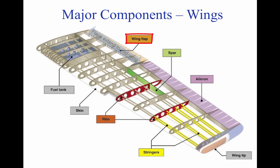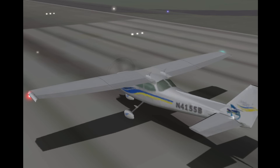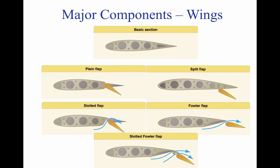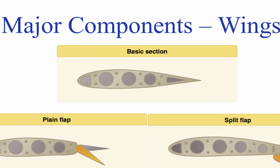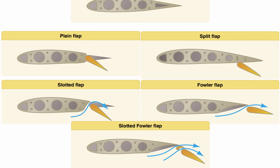Flaps extend outward from the fuselage to near the midpoint of each wing. The flaps are normally flush with the wing's surface during cruising flight. When extended, the flaps move simultaneously downward to increase the lifting force of the wing for takeoffs and landings. The pictures above show different styles of flaps, including a retracted flap and five pictures showing different styles and their effect on airflow. These different designs are discussed in more detail in the flight controls lesson.